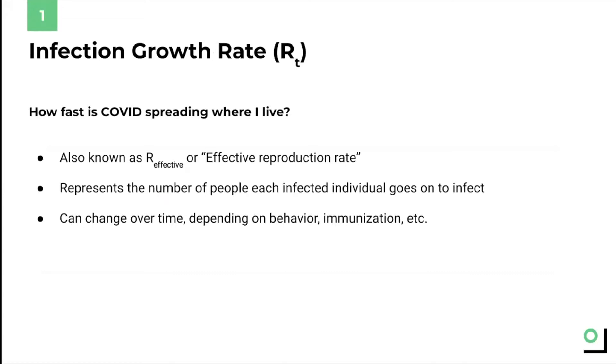Infection growth rate is also known as R_t or R-effective and it's one of the most important metrics when it comes to COVID because it tells us how fast COVID is spreading in a given area. The value of R_t represents the number of people that a single infected person goes on to infect in a specific area over a specific period of time.